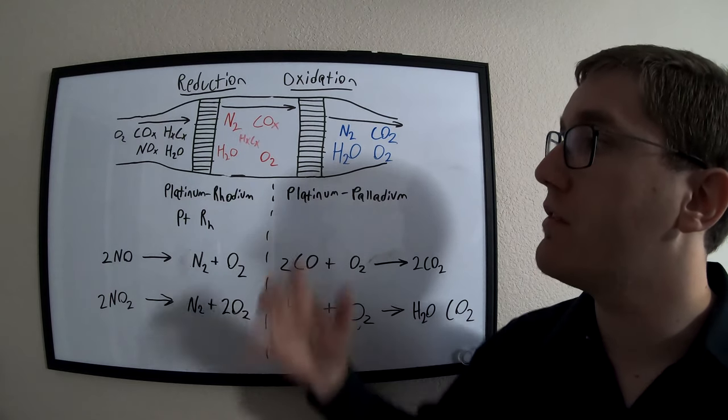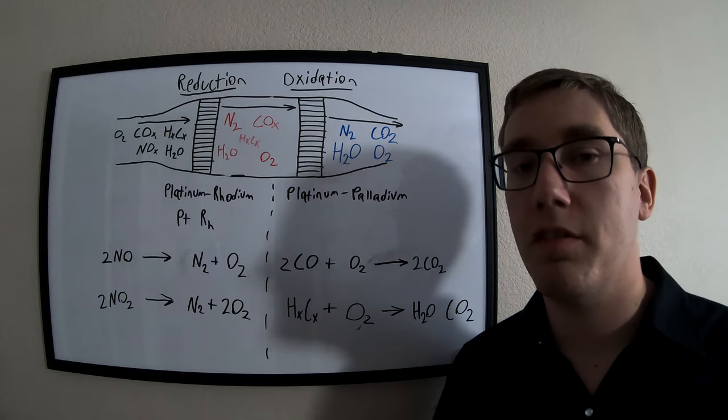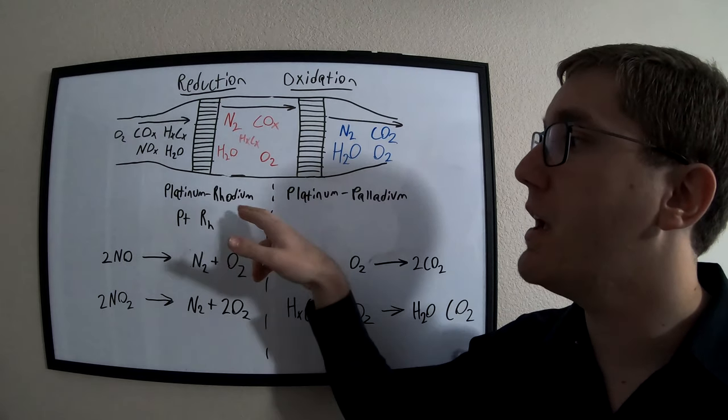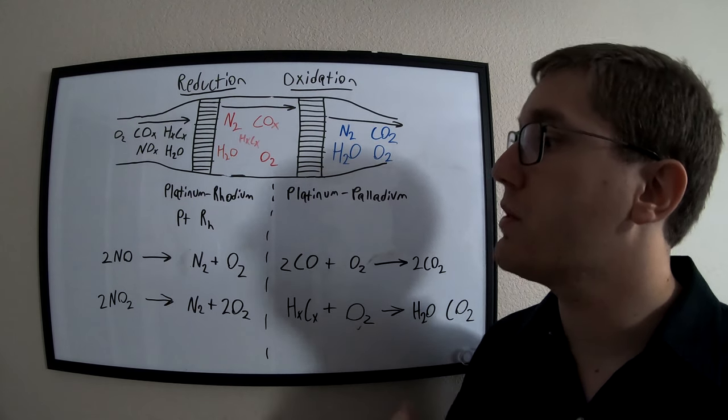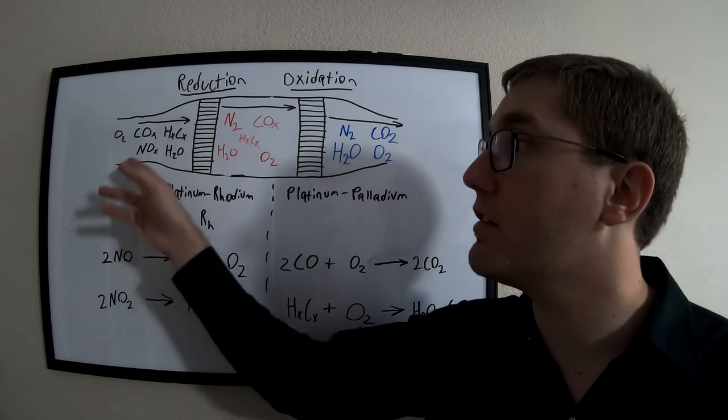In the reduction phase, it is made out of a platinum rhodium material. We have this mesh here that you see inside the catalytic converter made out of this material, and it is responsible for reducing some of the nitrogen oxides that are inside the exhaust gases.